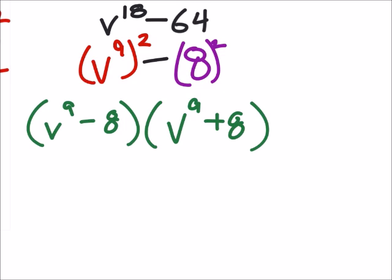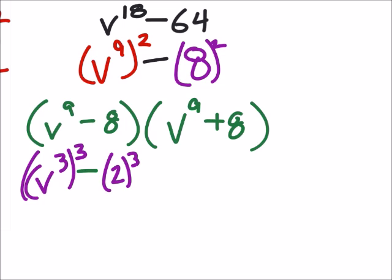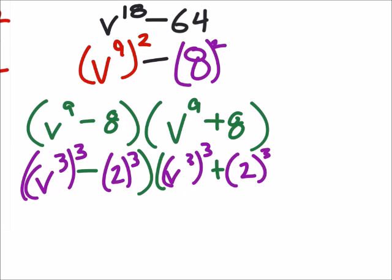So what do we get then? So this is v to the power of 3 cubed minus the 8, which is 2 cubed. And same thing on this side. We got v to the power of 3 cubed, but plus the 8, which is 2 cubed.